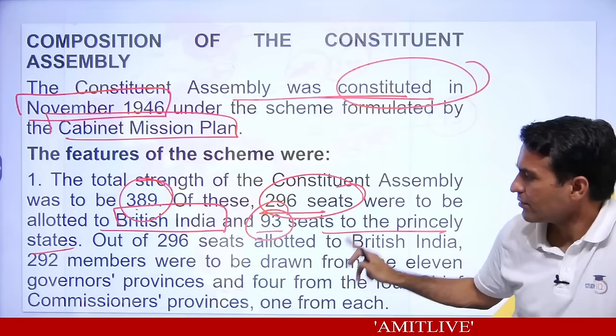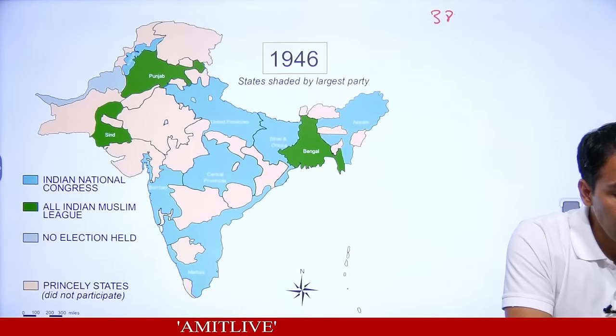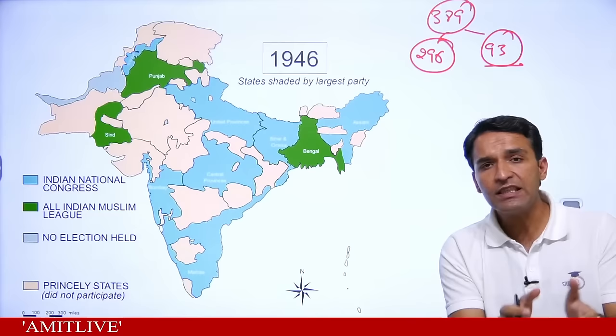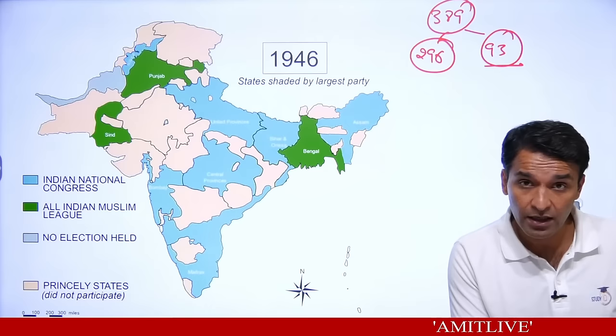Out of 296 from British India, 292 came from 11 provinces. Now the important point: these 93 from princely states were easy because they would simply be nominated by the princes. From the provinces — sky blue areas had Congress majority, green color areas had Indian Muslim League majority — provincial elections were held in 1946, and kind of provincial governments had been formed.